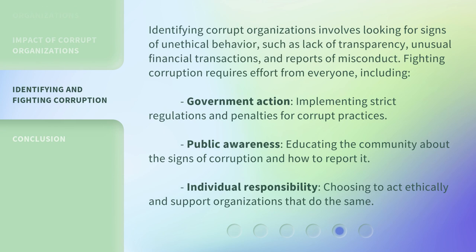Identifying corrupt organizations involves looking for signs of unethical behavior, such as lack of transparency, unusual financial transactions, and reports of misconduct. Identifying corruption requires effort from everyone, including government action — implementing strict regulations and penalties for corrupt practices — public awareness, educating the community about the signs of corruption and how to report it, and individual responsibility — choosing to act ethically and support organizations that do the same.